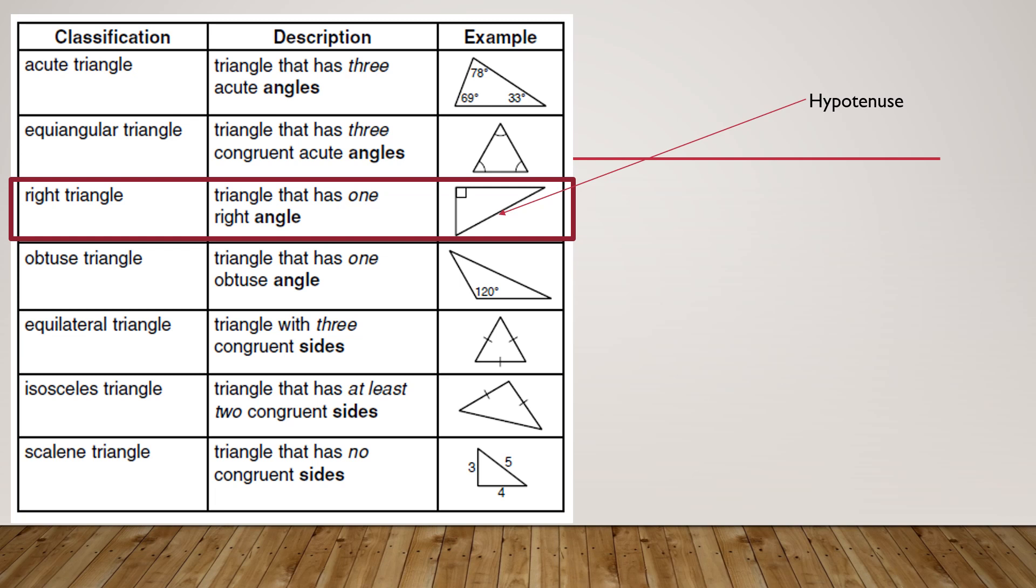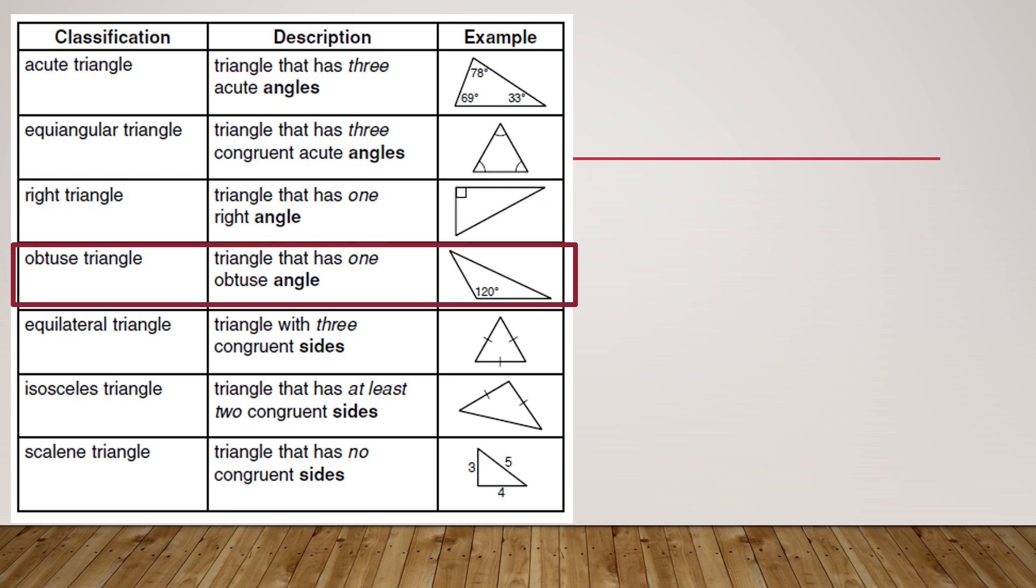We're going to learn something about right triangles. They have this thing called a hypotenuse. From all of the Pythagorean theorem work that we've done, you should have already known where the hypotenuse is. We have an obtuse triangle, so we need to know that at least one angle is greater than 90 degrees.